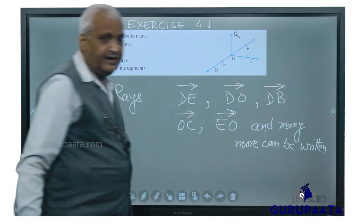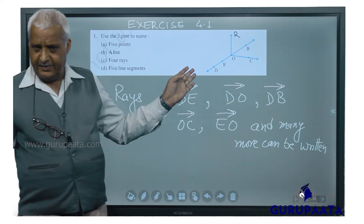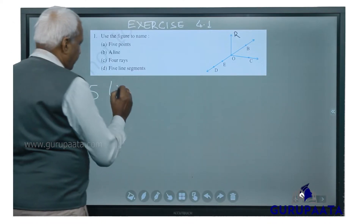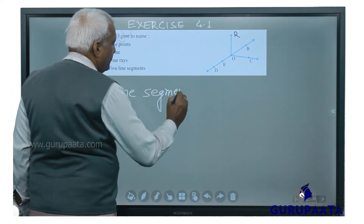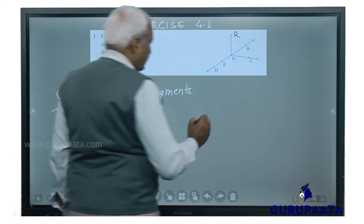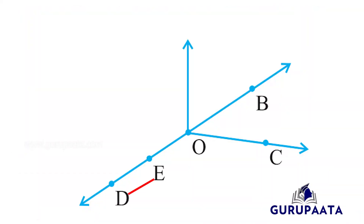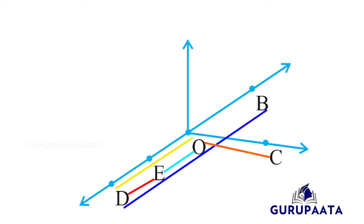Provided you select a point on this line segment or line, many more rays can be written. Then we will see D — 5 line segments. We will write DE, DO, DB, OC, EO, EB, and many more, provided you select the point on this line.